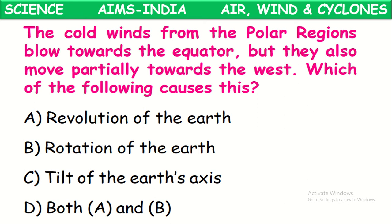The cold winds from the polar regions blow towards the equator but also move partially towards the west. Why? Cold winds blow from polar regions towards the equator because at the equator air pressure is decreased due to the hot sun, while temperature at polar regions is lower, so their air pressure is greater. They also move partially west because of the rotation of the earth.